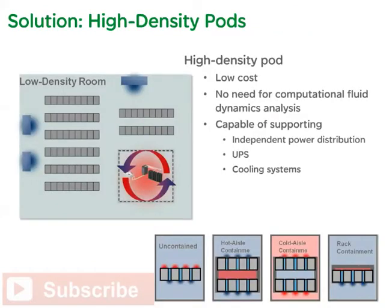Fortunately, a solution exists that can neutralize these issues. Placing high-density racks in an isolated, self-contained area of the data center provides a low-cost, viable solution to these challenges. This high-density pod would not require complex computational fluid dynamics analysis prior to installation. Here we see some high-density pod implementation methodologies, all of which are capable of supporting independent power distribution, UPS, and cooling systems. This drop-in solution eliminates the hot spots by simply moving high-density equipment into the pod.